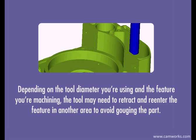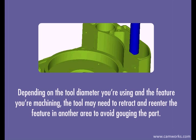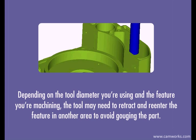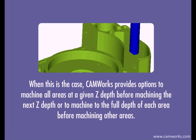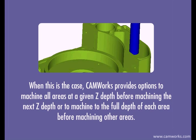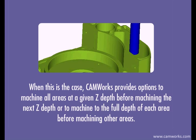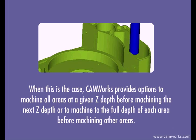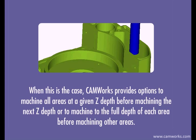Depending on the tool diameter you're using and the feature you're machining, the tool may need to retract and re-enter the feature in another area to avoid gouging the part. When this is the case, CAMWORKS provides options to machine all areas at a given Z-depth before machining the next Z-depth, or to machine to the full depth of each area before machining other areas.